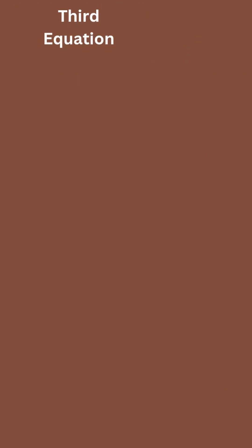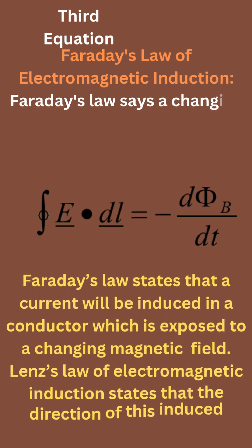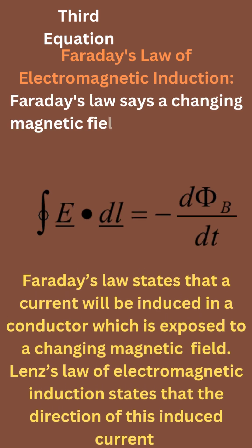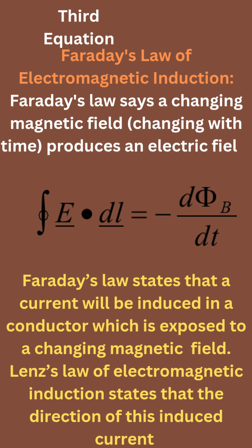Let's see the third equation, it is Faraday's law of electromagnetic induction. Faraday's law says a changing magnetic field, changing with time, produces an electric field. Here is its integral form. Faraday's law states that a current will be induced in a conductor which is exposed to a changing magnetic field. Lenz's law of electromagnetic induction states the direction of this induced current.